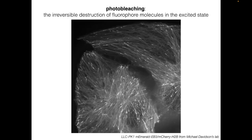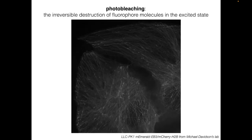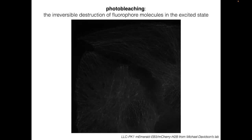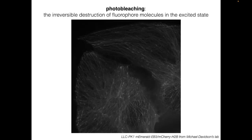Here is an example of a sample photobleaching. These are LLC PK1 cells expressing an mEmerald-tagged EB3 protein, imaged on a spinning disc confocal microscope. As the time lapse proceeds, the image gets dimmer as mEmerald molecules photobleach. Note that the video is playing on a loop — when you see the signal come back, that's the video restarting. The photobleaching itself is irreversible.